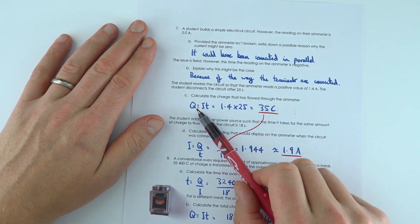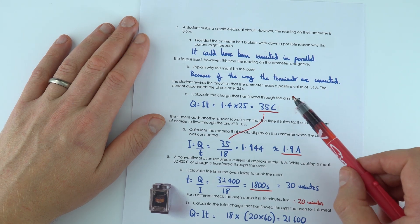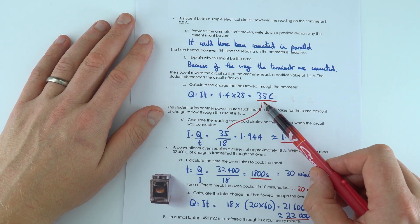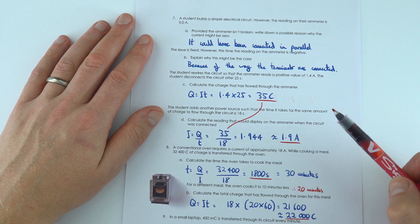For this one over here, we've worked it out using Q equals IT to find the value of 35 coulombs. And then this one, I've used the same value 35 in this one here to give a final answer of 1.9 amps to two significant figures.